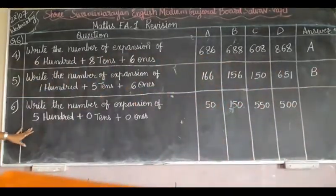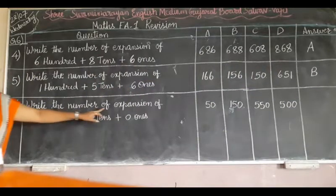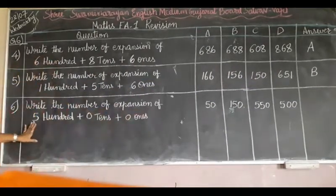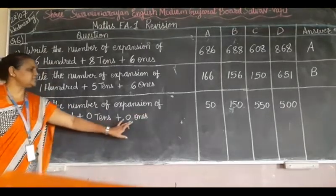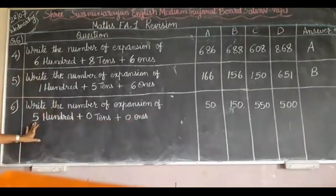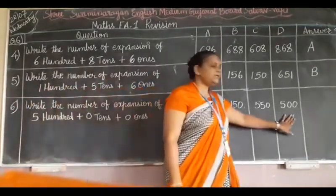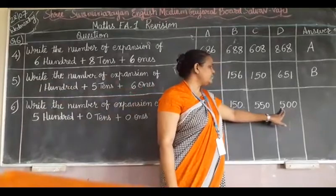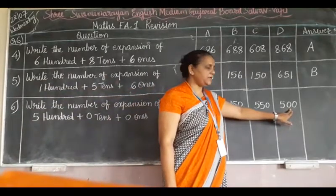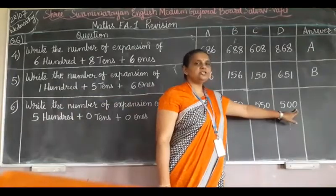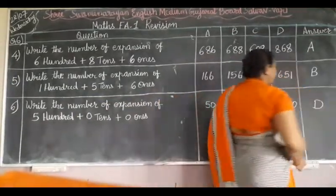Now sixth one: write the number expansion of 500 plus 0 tenths plus 0 ones. Which one is right? Yes, D option is the right answer. 5 is in the hundredths place, 0 is in the tenths place, and 0 is in the ones place. This means D option is the right option.